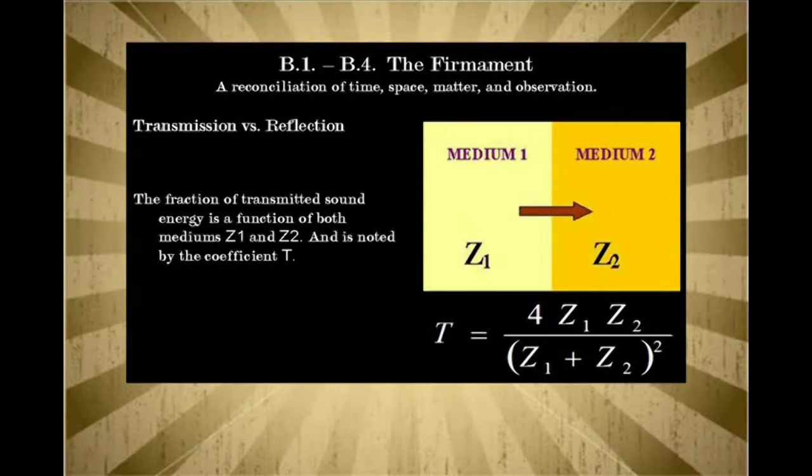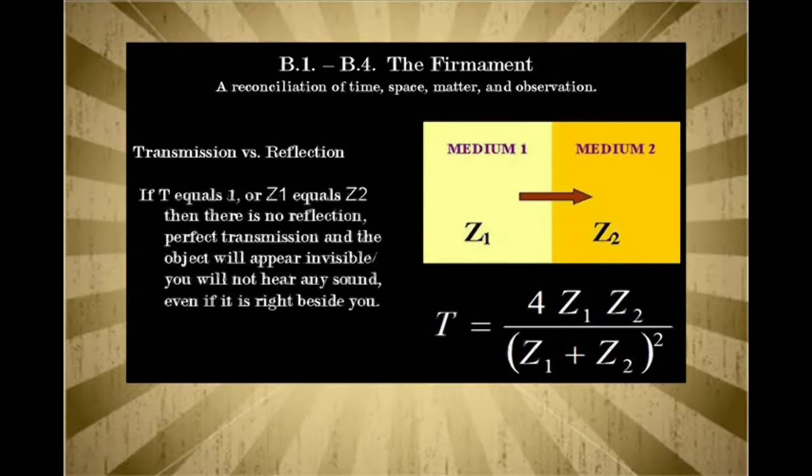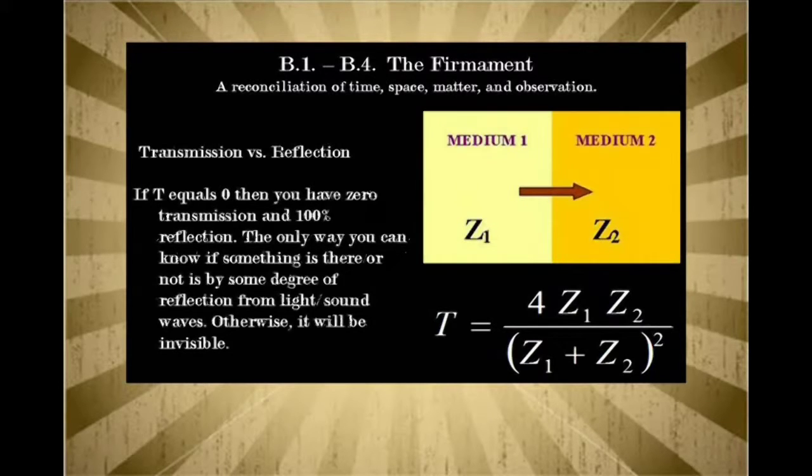Now, if T equals one, or Z1 equals Z2, then there is no reflection. Perfect transmission, and the object will appear invisible, and you will not hear any sound, even if it is right beside you. If T equals zero, then you have zero transmission and 100% reflection. The only way you know something is there is if it reflects light or sound.